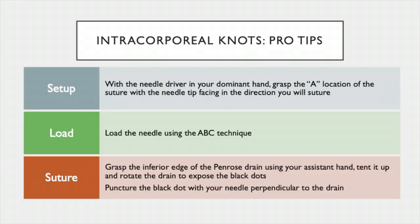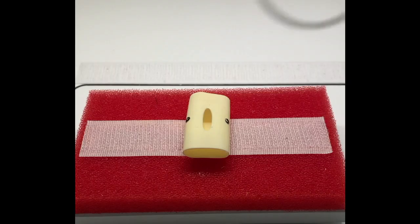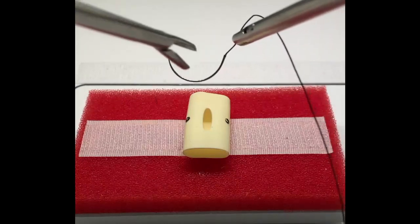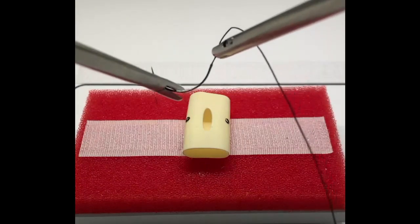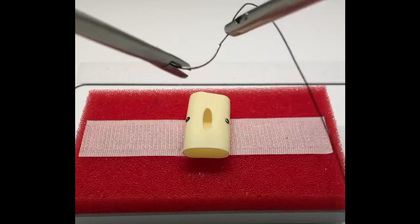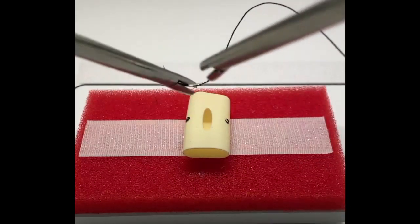The first three pro tips are also the same. Introduce your needle from the A location, grasp it at the B location, and adjust it from A until the orientation is correct. Load at position C at a perpendicular angle.